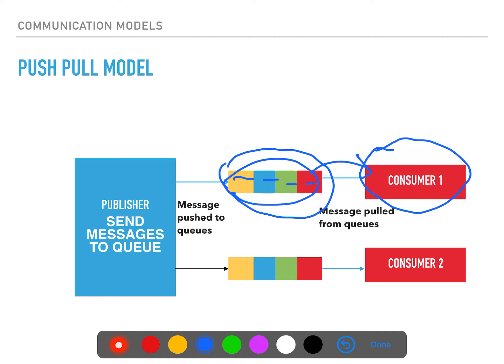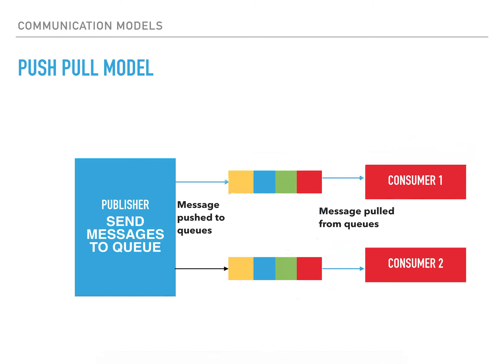The publisher sends messages to the queue, which holds them. For instance, if you maintain the same email address on two devices and delete a message on one device, it may still appear on the other device because the message still exists in the queue. After a period of time, it will also be deleted from the queue. This is called the push-pull model. So the three models so far are: client-server, pub-sub, and push-pull.